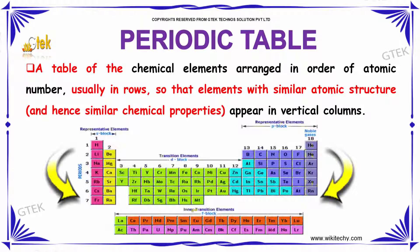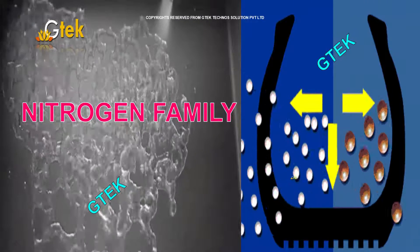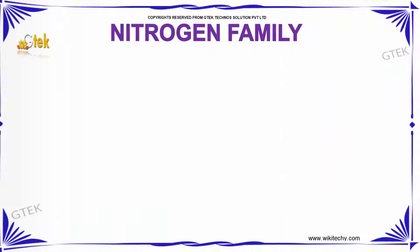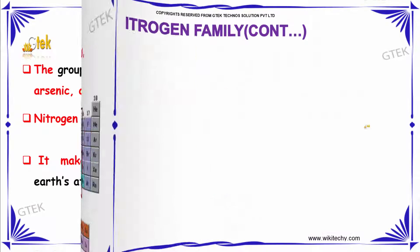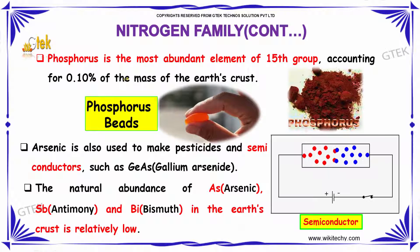These are called transition elements and this is called inner transition elements. The column is considered as periods and this one is considered as rows. Nitrogen family — Group 15 — its elements are nitrogen, phosphorus, arsenic, antimony, and bismuth. Nitrogen is a gas; it makes up 78 percent of the atmosphere by volume.